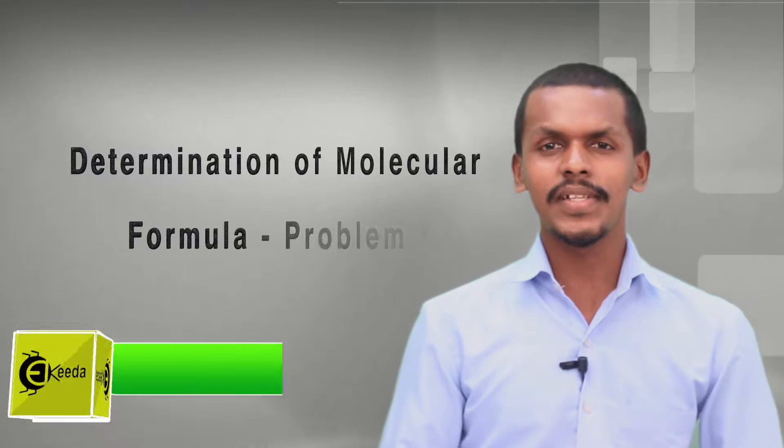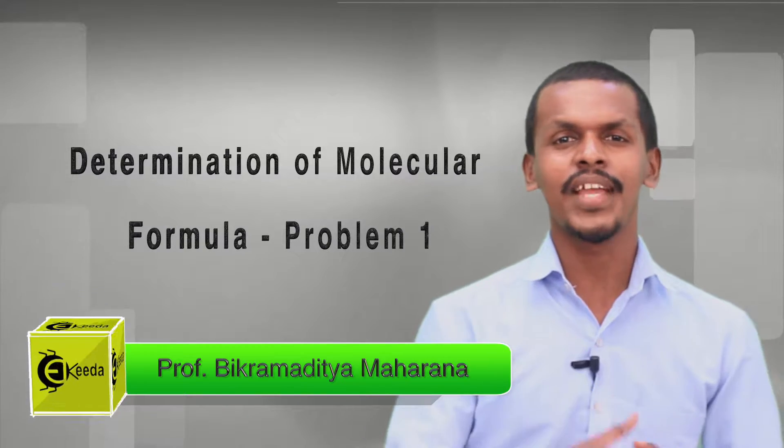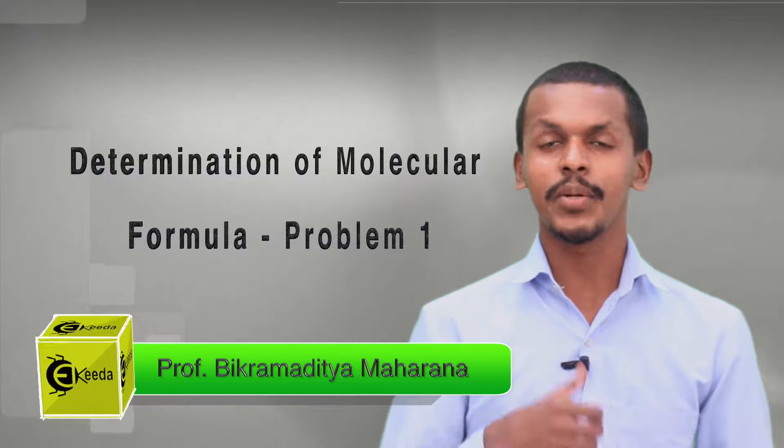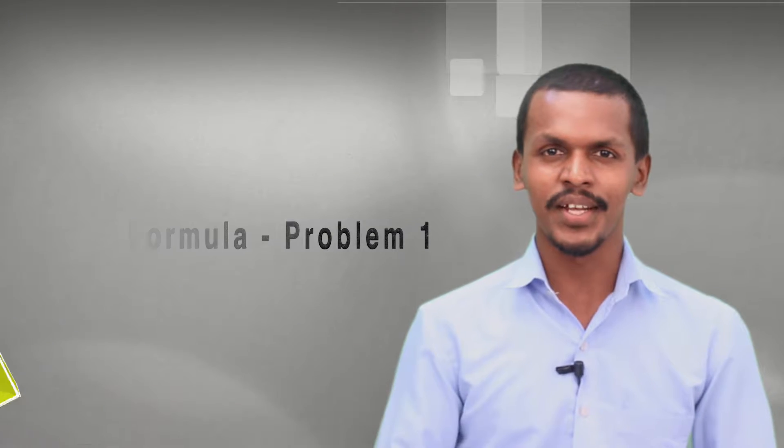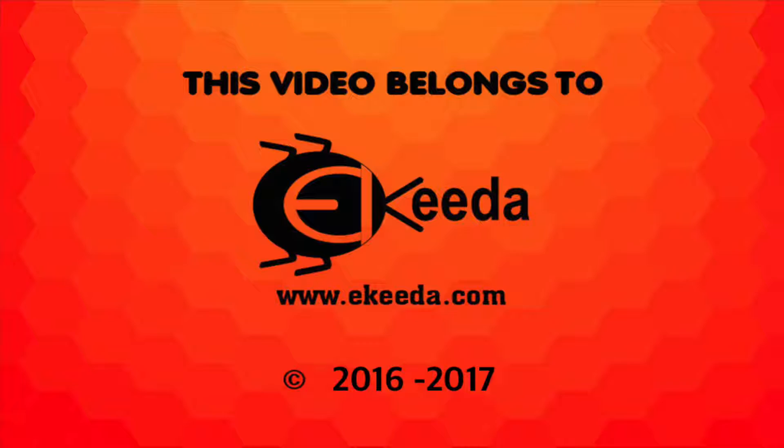We are covering basic principles and techniques in organic chemistry, and the topic is determination of the molecular formula of an organic compound. In the last lecture we discussed what is empirical formula, what is molecular formula, and the relation between them — including how to determine the empirical formula of a given organic compound. Based on that, we are going to do a numerical problem.